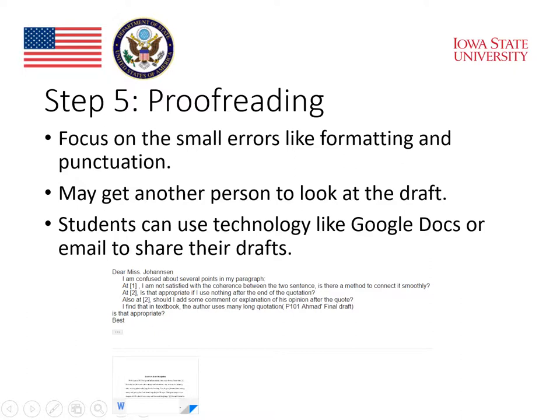The final step in the writing process is proofreading. Proofreading assumes that students have already found all of the major errors in an assignment, and that they are now focusing on little things, like punctuation and formatting. At this step, I encourage students to use the Purdue OWL website again, this time focusing on their pages on MLA formatting.